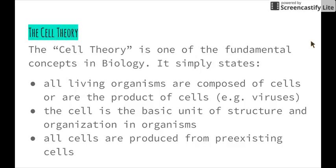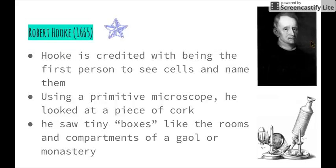Basically what we have to do is look at the history behind coming up with these three dot points, as well as the evidence that was provided to support them. Firstly, we're going to look at Robert Hooke, who was specifically mentioned in the syllabus dot point. Robert Hooke is credited with being the first person to see cells and to actually give them that name.